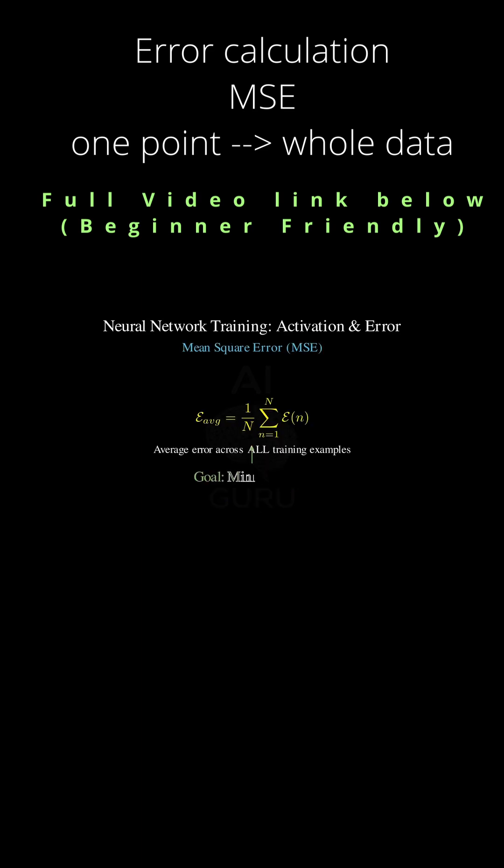So E(n) is just for one example. We need a cost function that covers the entire dataset. That's where the average error energy, or what's sometimes called the empirical risk, comes in. This is the metric we actually want to minimize - it's just the average of that instantaneous error energy across all n training examples.